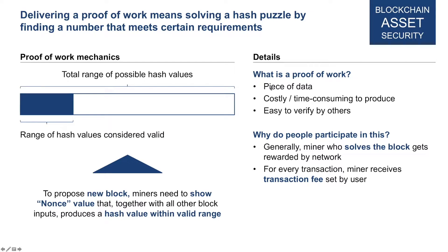A proof of work is a piece of data — something like the nonce, or the nonce combined with other inputs — that gives a hash function output that is costly and time-consuming to produce. You brute-force many different nonce values to find one that is valid. It also needs to be easy for others to verify validity: when a miner posts a block with his nonce value to the blockchain, other nodes can quickly confirm whether it is valid. All miners try to solve the hash puzzle, and the very first one to find a valid block posts it to the network and is selected by others as the next valid block.